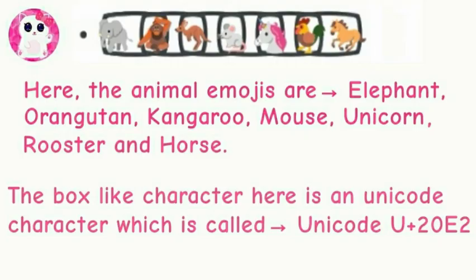To give you a brief introduction, the animal emojis here are an elephant, an orangutan, a kangaroo, a mouse, a unicorn, a rooster, and a horse. The box-like character here is a unicode character called Unicode U+20E2.